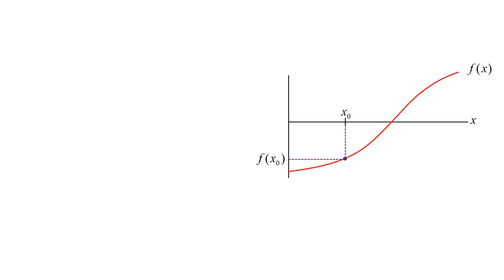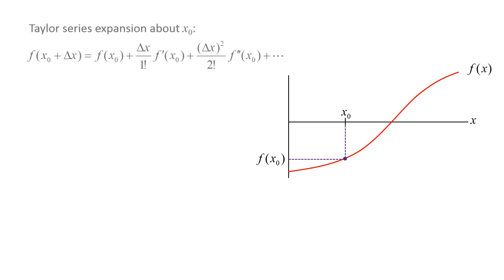If we want to find the value of the function at some distance delta x away from x0, we could use a Taylor series expansion about x0. f evaluated at x0 plus delta x equals f evaluated at x0, plus delta x times the first derivative of f evaluated at x0, plus an infinite number of higher order terms such as delta x squared over 2 times the second derivative of f evaluated at x0.